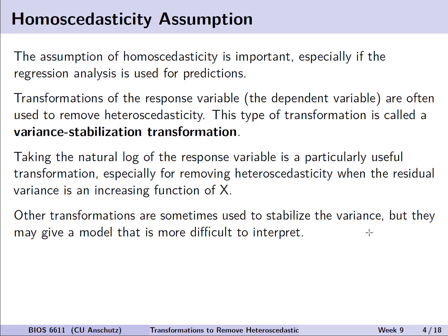One that we'll focus again a little more on is taking the natural log of the response variable. This is especially useful if we have heteroskedasticity where the residual variance is an increasing function of x, or there's a fan or a funnel shape. Other transformations are sometimes used to also stabilize the variance, but they may ultimately give a model that may be more difficult to interpret.